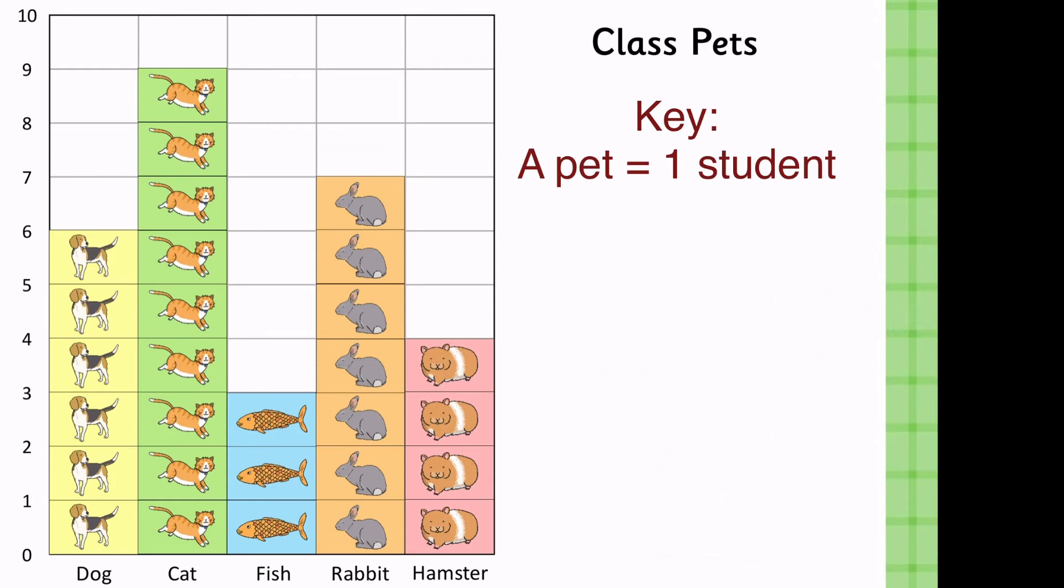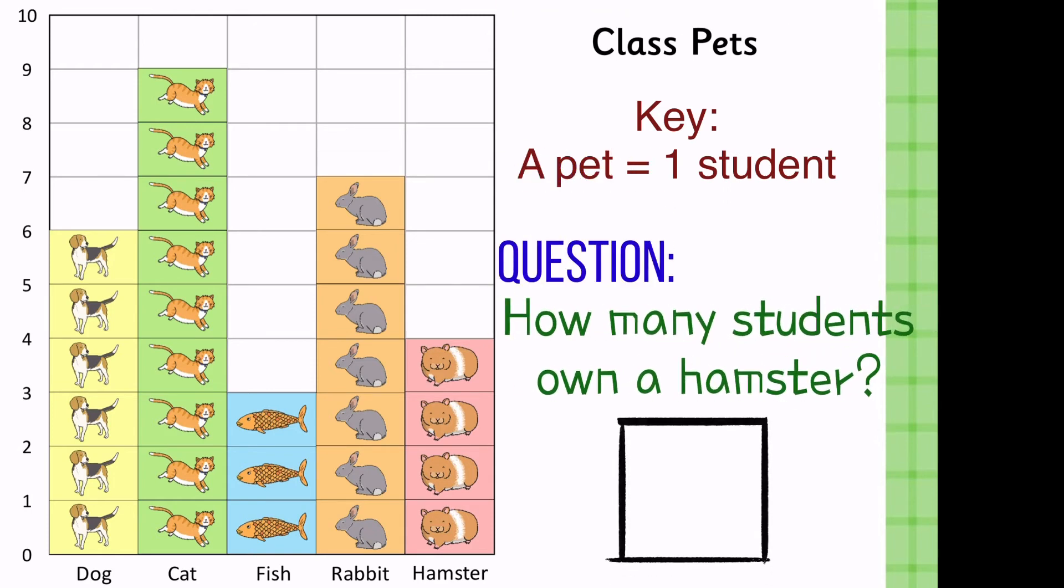Let's try another one. How many students own a hamster? Looking eyes. What's your guess? The correct answer is 4.